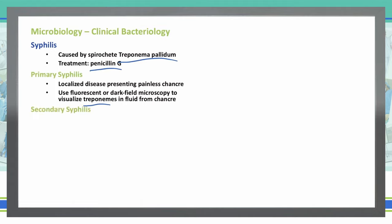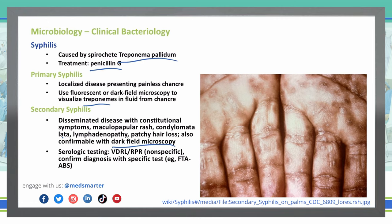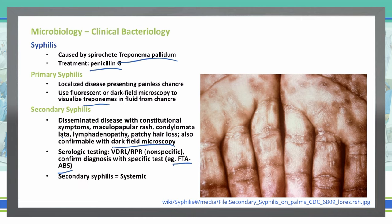Secondary syphilis is where the primary infection becomes more migratory throughout the body. It's disseminated with constitutional symptoms like a maculopapular rash, condyloma lata, lymphadenopathy, and patchy hair loss, also confirmed with dark-field microscopy. Testing uses the VDRL RPR — venereal disease research laboratory and rapid plasma reagent — which is nonspecific. We confirm diagnosis using the specific FTA-ABS, the fluorescent treponemal antibody absorption test. Primary syphilis is localized; secondary syphilis is systemic, and can be followed by latent syphilis.